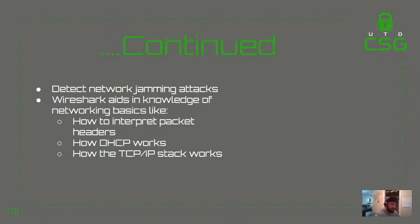You can also detect network jamming attacks. Wireshark aids in the knowledge of networking basics like how to interpret packet headers, how DHCP works, and how the TCP/IP stack works. If someone is trying to de-auth you from the network — a technique we'll use to break WPA/WPA2 — you can see those packets coming in along with the attacker's MAC address. That's why it's a good idea to spoof your MAC address before doing an attack like that in a lab environment.